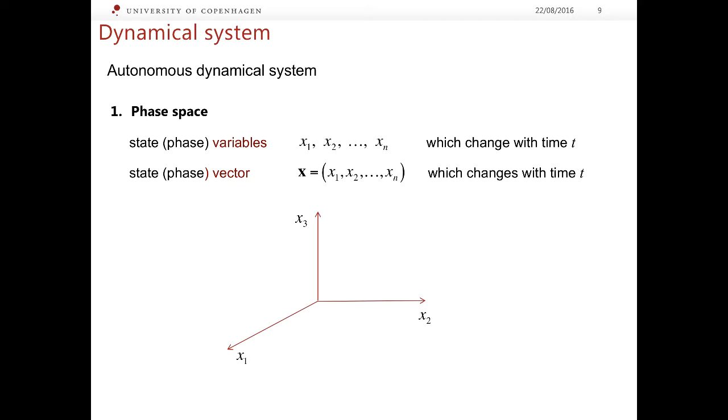Every state vector is represented as a single point in this space and because all variables will change with time the vector x will change in time too which means its representative point will change. Now we can introduce the phase space as the space of all possible states of the given system.